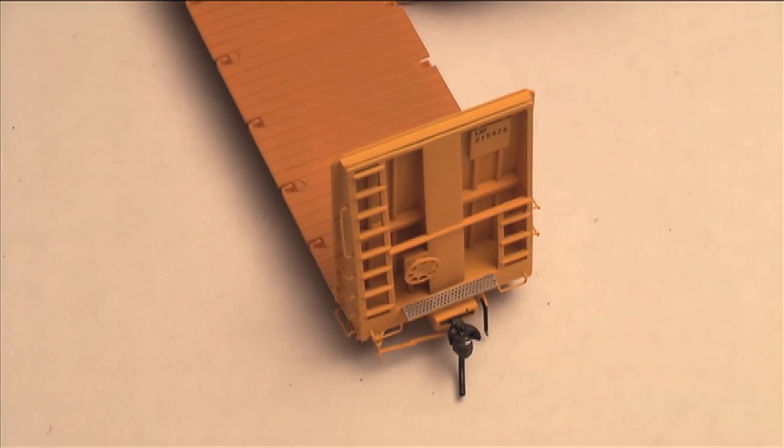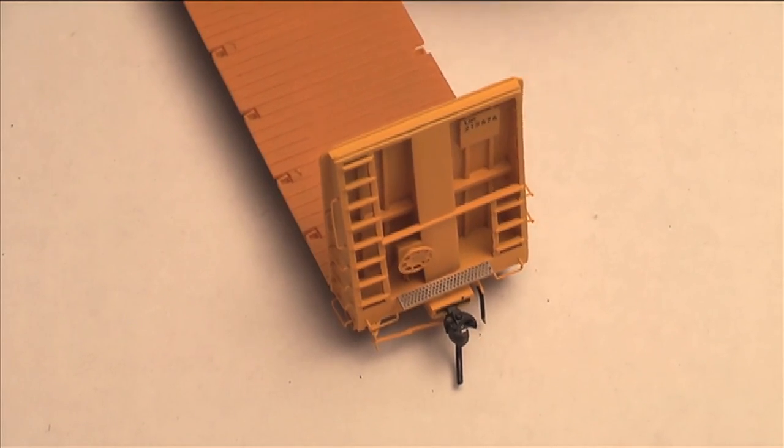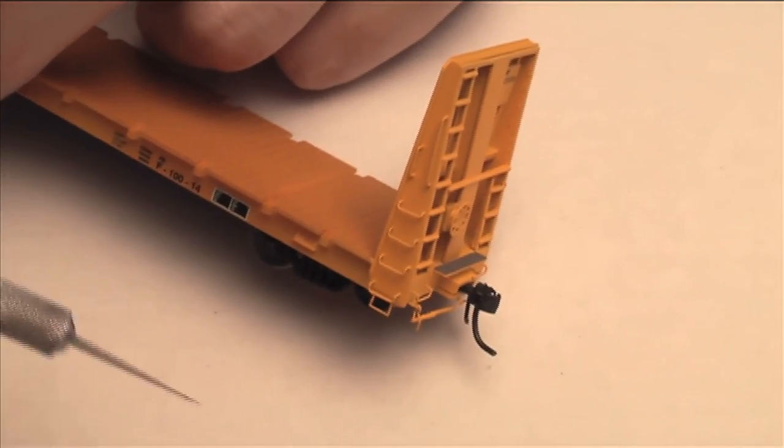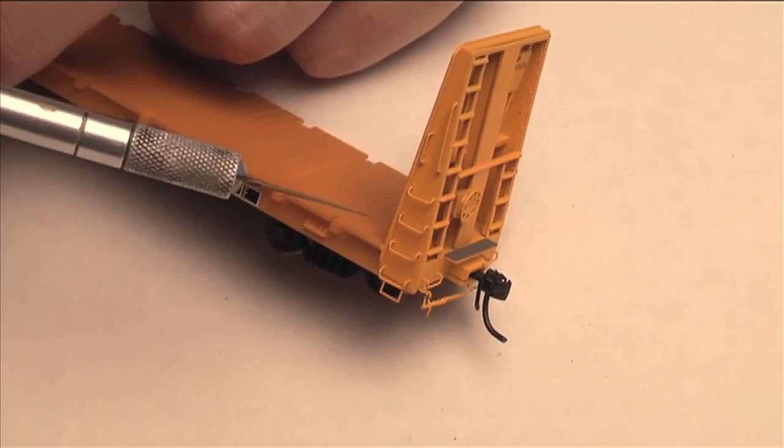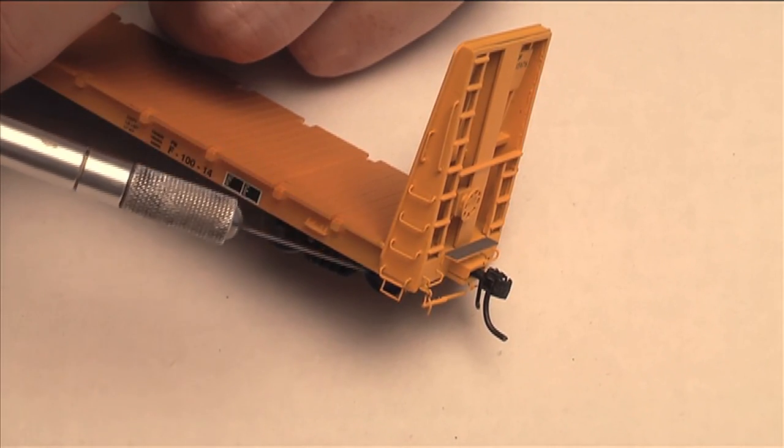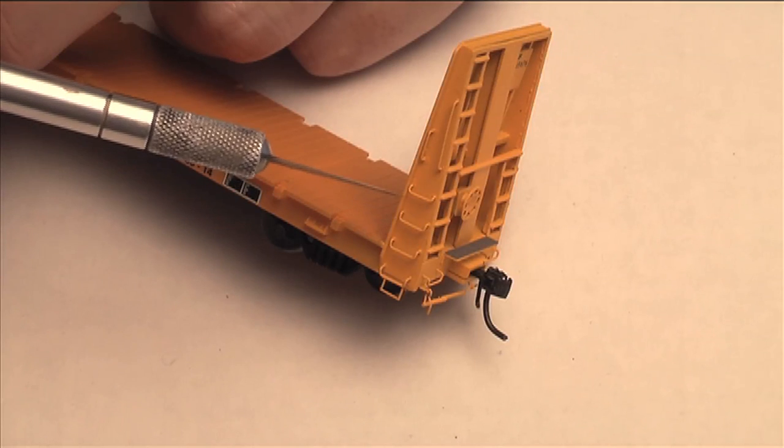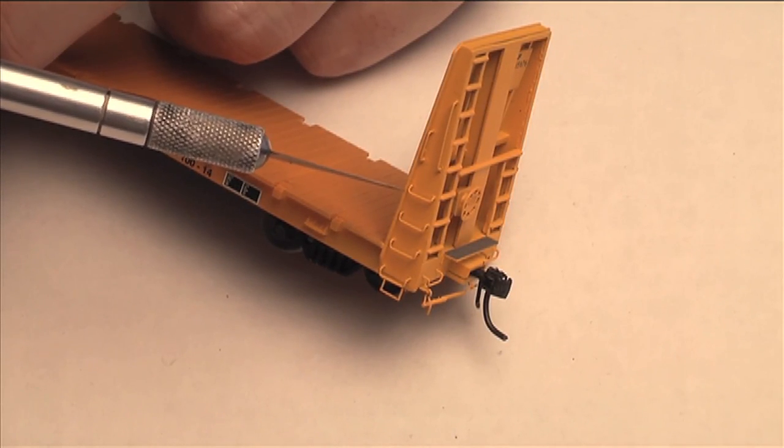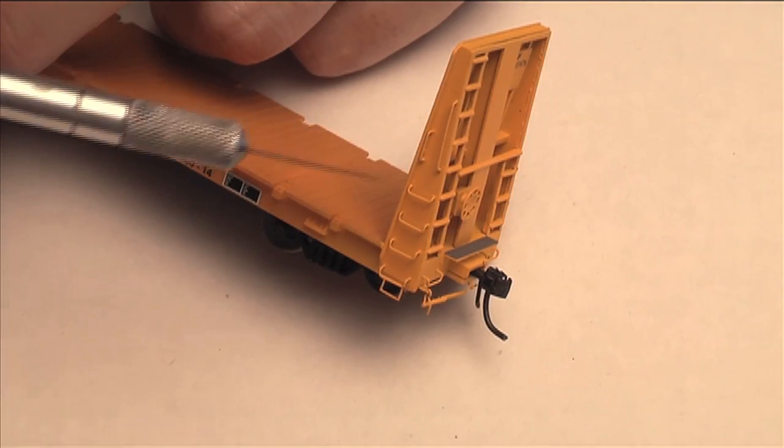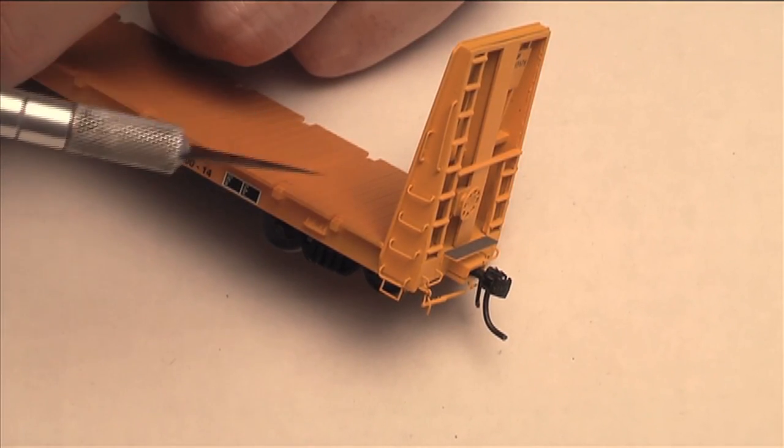What about those grab irons? Those look like they're smaller than regular plastic. They are, yeah. These are wire grab irons. Actually these three down the bottom I think are from Tichy, but this one up here is a little shorter, so I had to actually custom bend that one out of brass. And these two I custom bent out of brass also because there weren't any standard size.